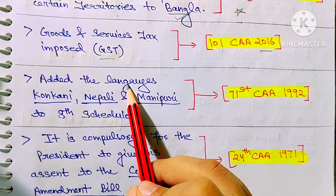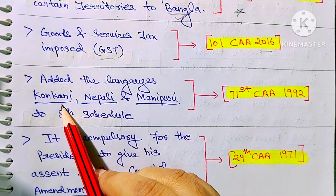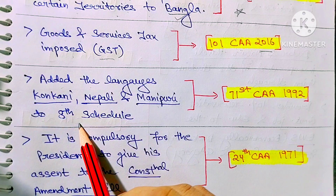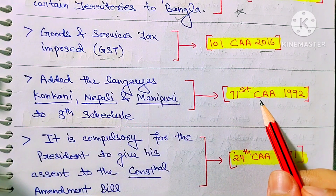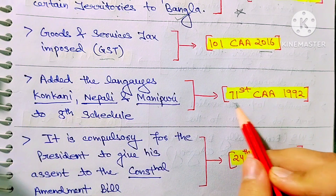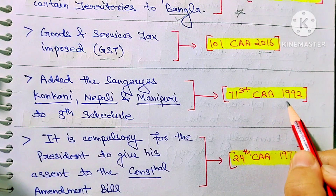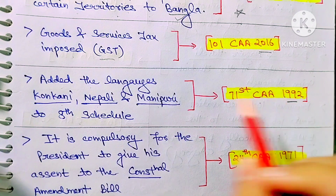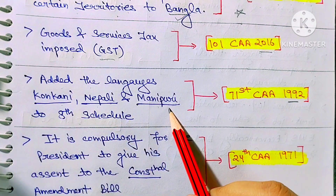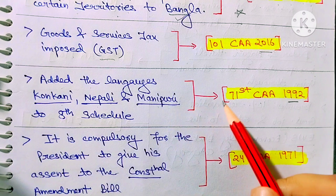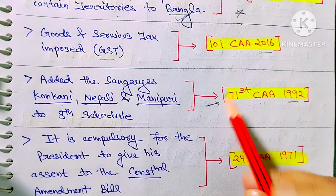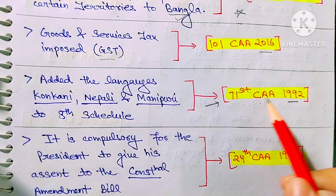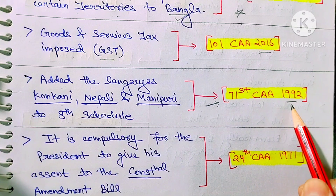Next: the languages Konkani, Nepali, and Manipuri were added to the 8th Schedule through the 71st Constitution Amendment Act 1992. These three languages — Konkani, Nepali, and Manipuri — were added through this amendment act.